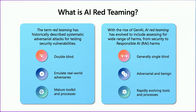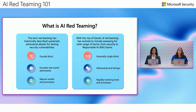Before we get started, we wanted to define what AI Red Teaming is. If you come from a traditional security background, this is going to mean something different than you're used to. The term Red Teaming historically describes a double-blind process where you're trying to evade detection and go low and slow to see how far you can get in a system, emulating advanced adversaries like nation-states with mature toolkits and processes. AI Red Teaming, on the other hand, tends to be single-blind — the product team or model owner knows that we're testing — and we emulate both adversarial and benign user personas. We also deal with rapidly evolving tools and processes, so this looks and feels very different from a traditional Red Teaming operation.